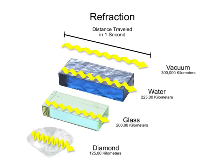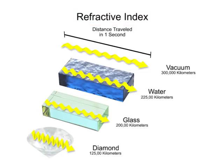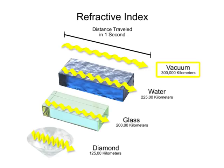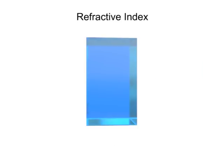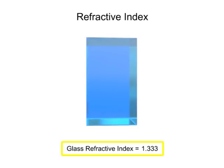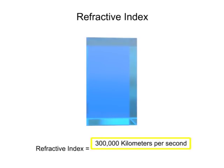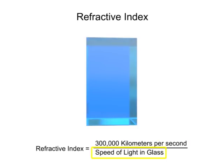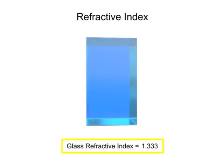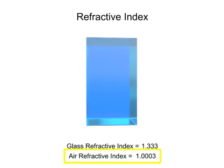Transparent materials have what is called a refractive index. This is the speed at which light travels in a medium compared to light traveling in a vacuum. For example, typical glass has a refractive index of 1.33. This is calculated by dividing the speed of light in a vacuum, 300,000 kilometers per second, by the speed of light in glass, 225,000 kilometers per second. The refractive index of air is 1.0003.